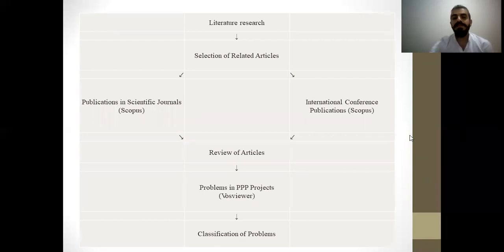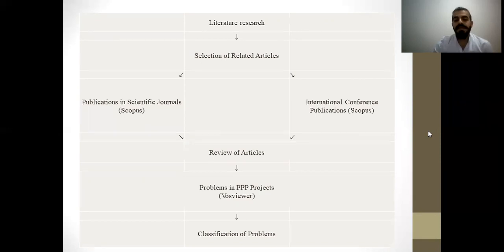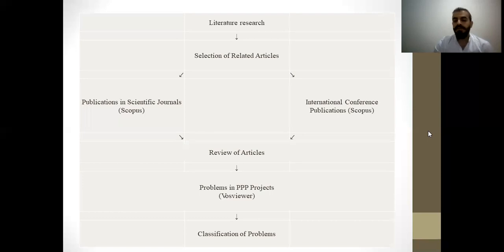The main aim of this study carried out in 2019 is to identify the problems in PPP projects in Turkey. As a first step, a systematic exploration of PPP publications was carried out in two scientifically reputable databases named Scopus and Web of Science core databases. The search strategy used in the study included terms such as PPP, PFI, public-private partnership, or P3. The research area was then narrowed to identify problems encountered in public-private partnership projects, and these studies were categorized worldwide.